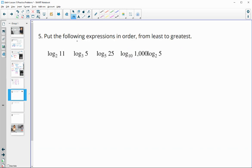Number five, put the following expressions in order from least to greatest. So remember that logarithms kick back exponents. So this one's going to be two to what power gives us 11? It's not a nice number. We'll come back to it. Three to what power gives us five isn't nice. Five to what power gives us 25? So we know this one's going to be two because five squared is 25. So that gives us kind of an anchor point.